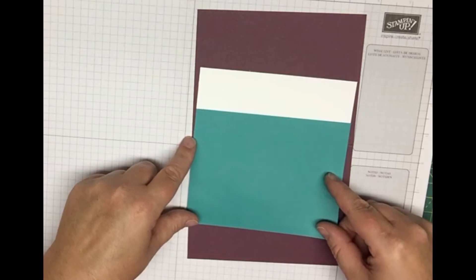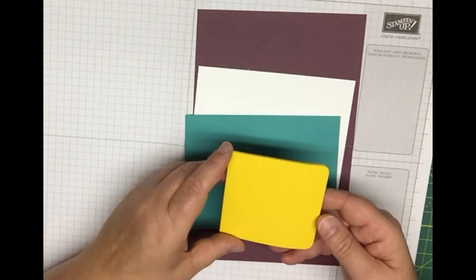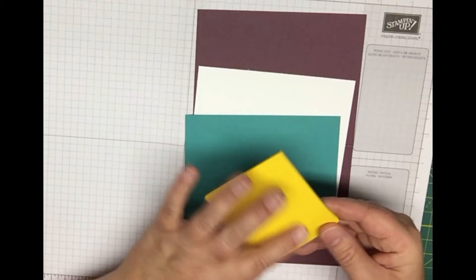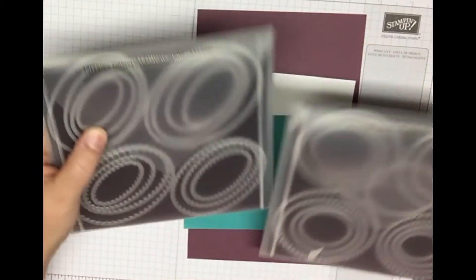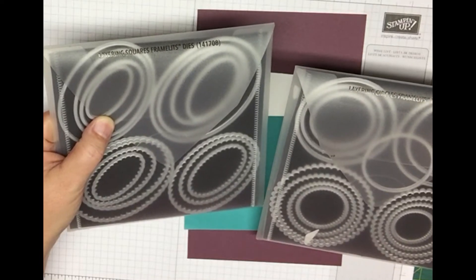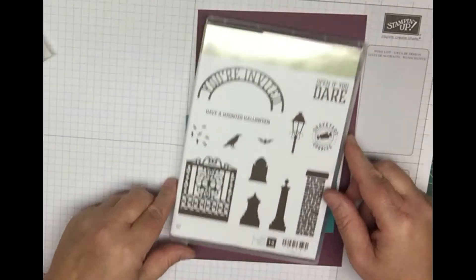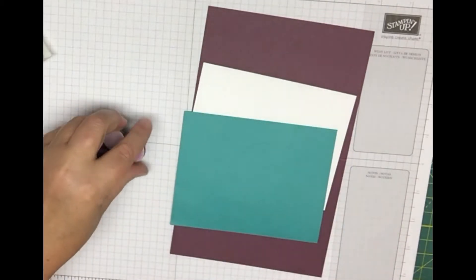You also will need sticky notes, just one, and you want the ones that have the stickiness on the full note. You also will need your framelits, layering framelits. I'm using this one of the circles and one of the ovals today. You also are going to need the Graveyard Gate stamp set. This is out of the holiday catalog and you also will need some sponge daubers.